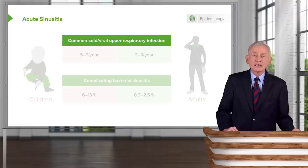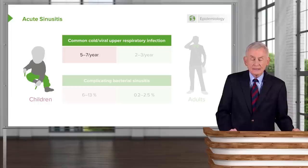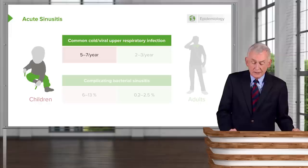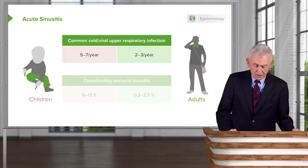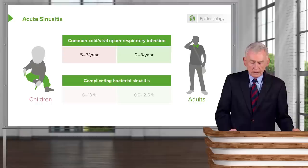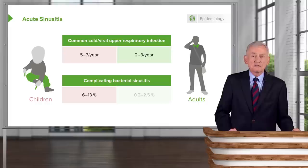Acute sinusitis is common, but it's most commonly caused by viruses. Children get the common cold five to seven times each year, and so do their parents. Adults without small children get two to three colds a year. Importantly, only six to thirteen percent of kids get bacterial sinusitis even though they get five to seven common colds a year — so bacterial sinusitis complicating a cold is actually quite unusual.